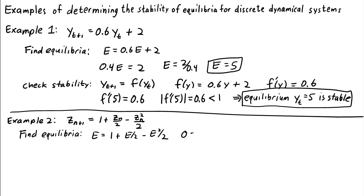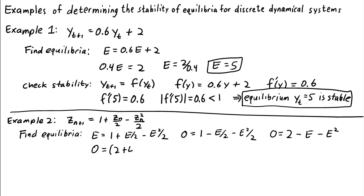We need to solve for e. Subtracting e from both sides and multiplying through by 2, we get 0 = 2 − e − e². We can factor this as (2 + e)(1 − e), so the equilibria are e = −2 and e = 1.